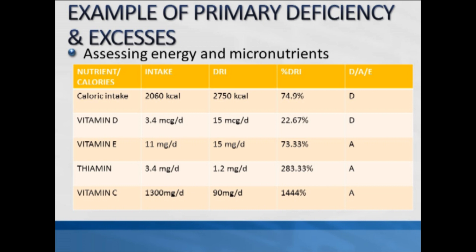For thiamine, the intake is 3.4 milligrams against a requirement of 1.2, which is 283.33 percent of the DRI. We might think that because it's over 100 percent it must be excessive, but for a nutrient to be excessive it has to exceed the UL and there has to be a UL. If you check the UL table at the end of chapter 3, there is no UL listed for thiamine, meaning it's impossible to say the intake is excessive — consequently the intake is categorized as adequate.